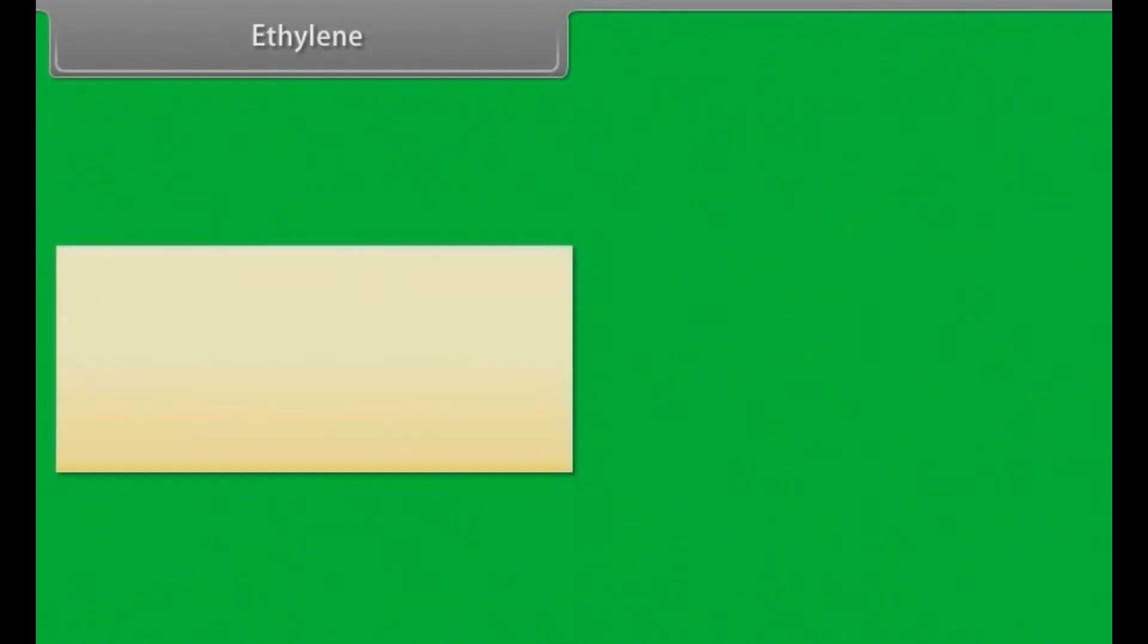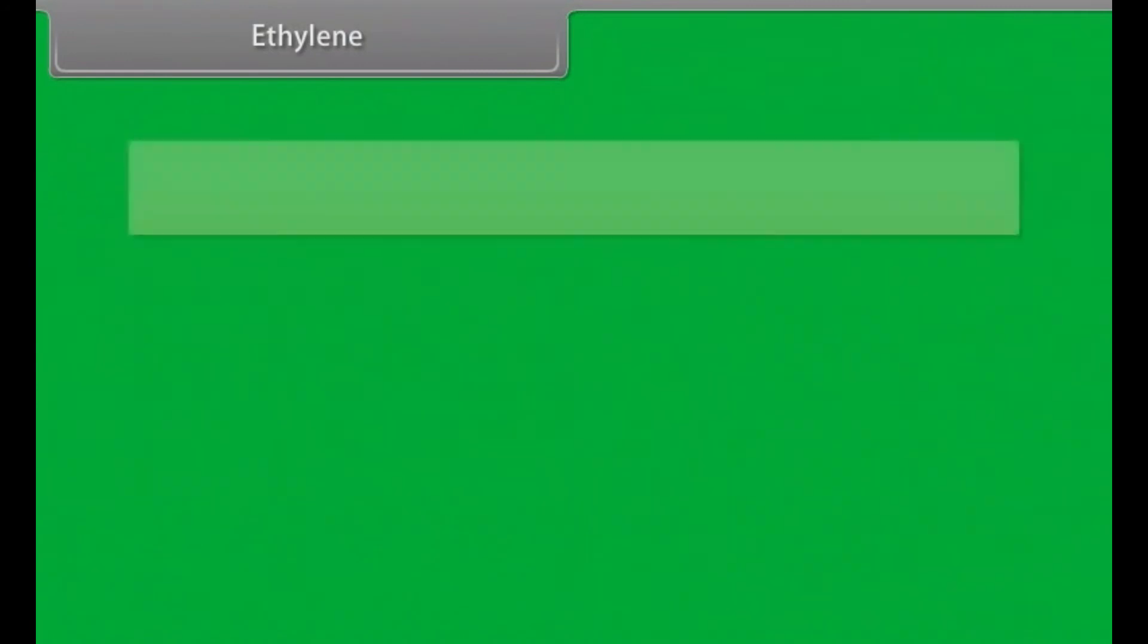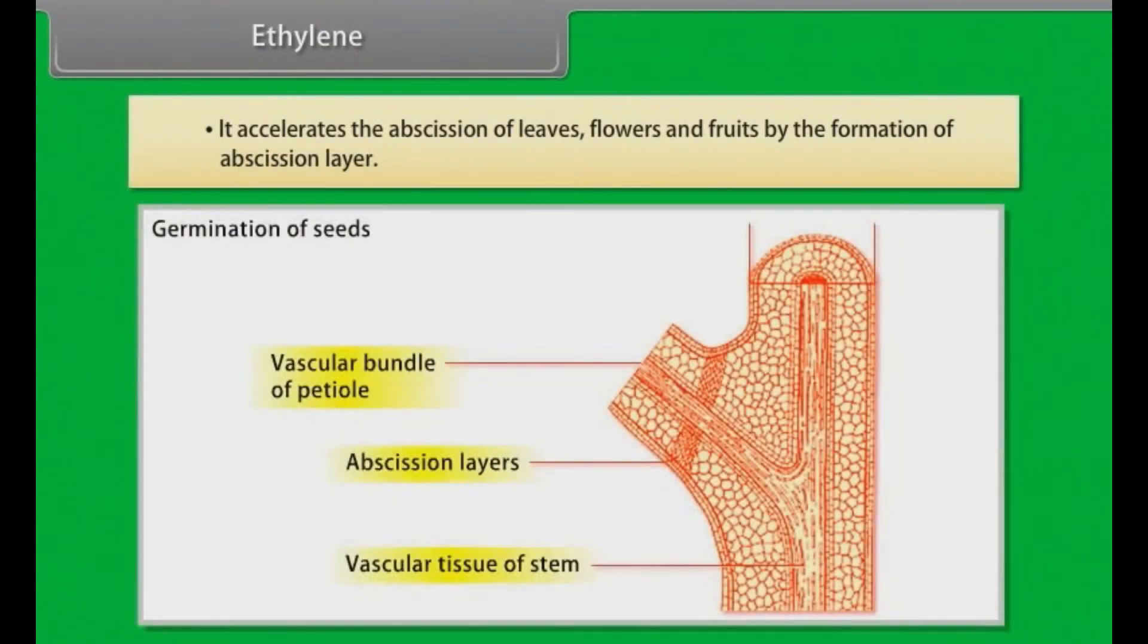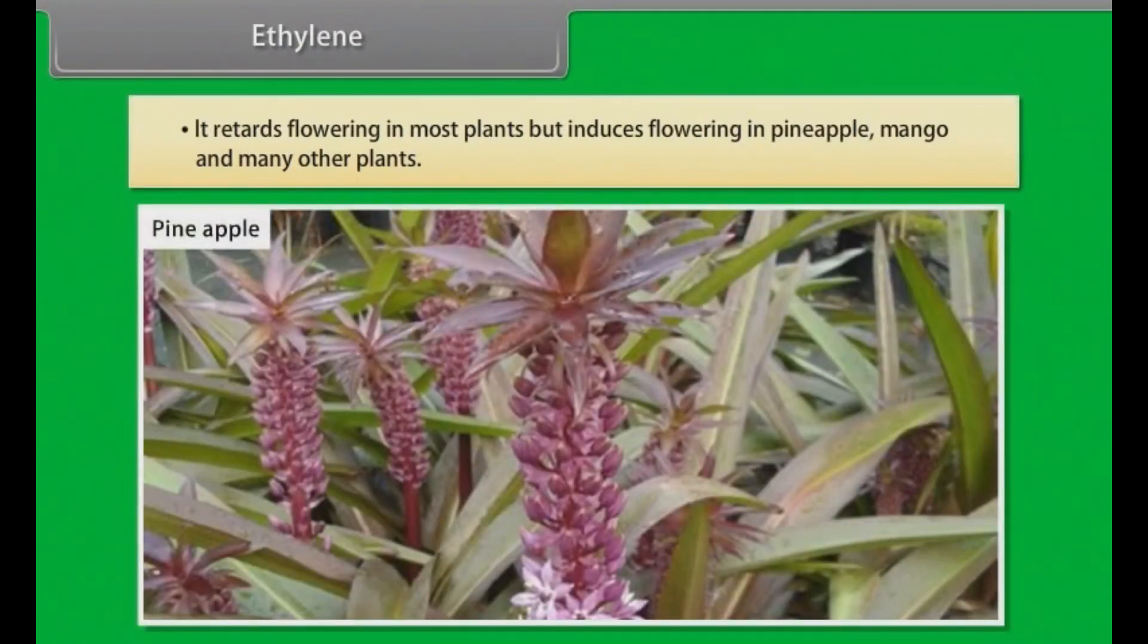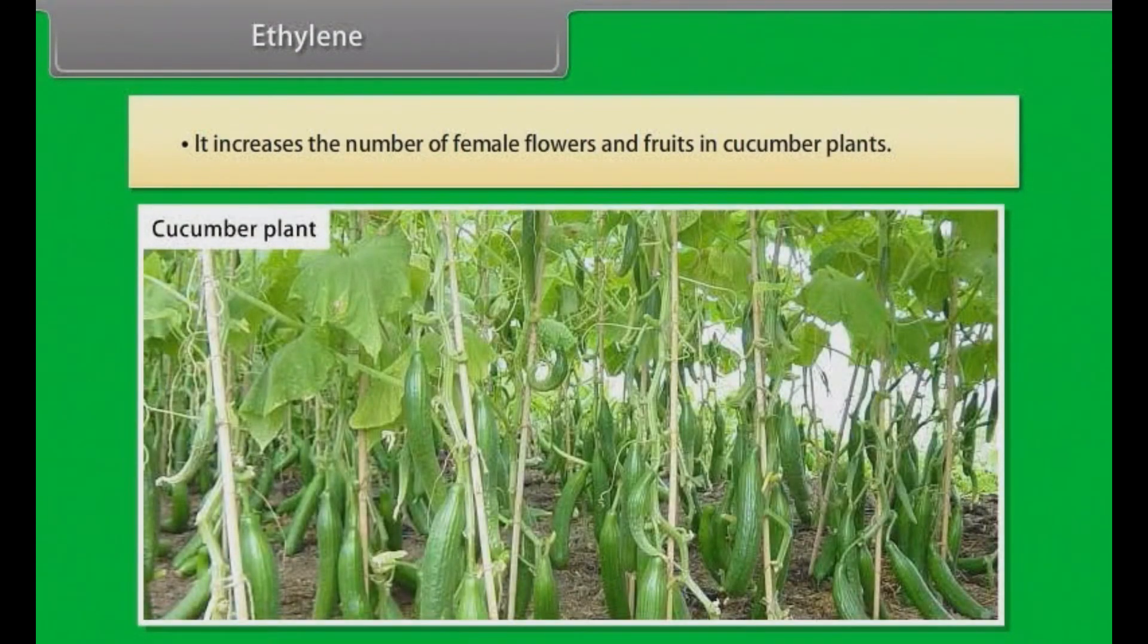Ethylene. Physiological effects of ethylene on plants: It modifies growth by inhibiting the elongation of stem and roots. It inhibits the growth of lateral buds and causes apical dominance. It accelerates the abscission of leaves, flowers and fruits by formation of abscission layer. It retards flowering in most plants but induces flowering in pineapple, mango and many other plants. It increases the number of female flowers and fruits in cucumber plants.